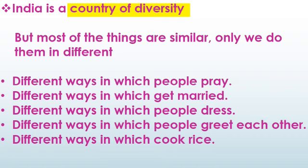Next is court marriage. Intercaste and interfaith marriages are a reality of India. Many people who want to avoid religious rituals opt for court marriage under the Special Marriage Act, 1954. The registrar is given a 30-day notice with residential and birth details of the bride and groom. Then, on the day fixed, they have to be present at the registrar's office with three witnesses to sign the legal documents and read the vows.